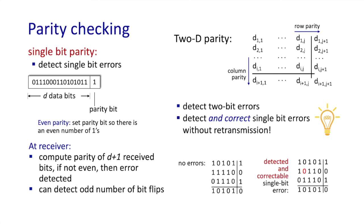In this case, the receiver says, hey, there's a parity error in row 2 and there's a parity error in column 2 as well. And so it knows that the bit in row 2, column 2 has been flipped. The error can be detected and corrected without retransmission.